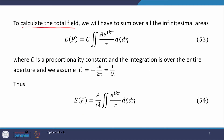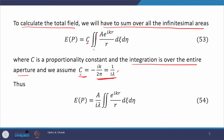To calculate the total field received in the screen plane, we sum over all the infinitesimal areas by performing a 2-dimensional integration over the entire aperture, where c is a proportionality constant. In expression 53, we assume c = −ik/(2πr) = 1/(iλ). This comes from the Fourier transform, which is not in the purview of this course. After substituting the value of c in equation 53, it reduces to a new expression — the field at point of observation p due to the entire aperture.